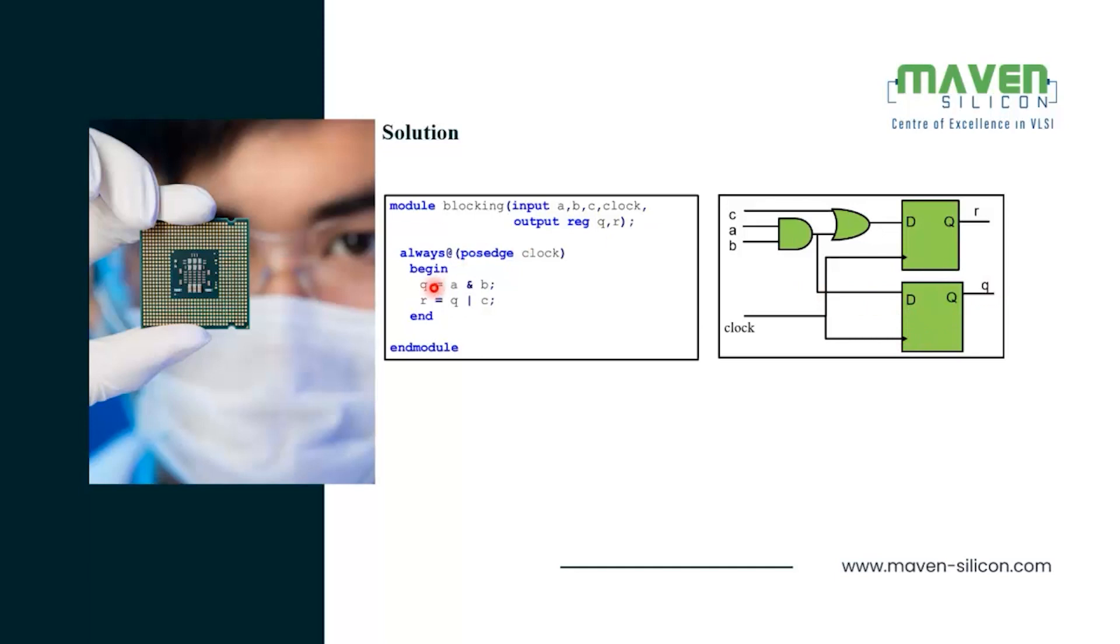After the Q is updated, which is a blocking assignment, the next statement will be executed where the updated and immediate value of this Q will be ORed with C.